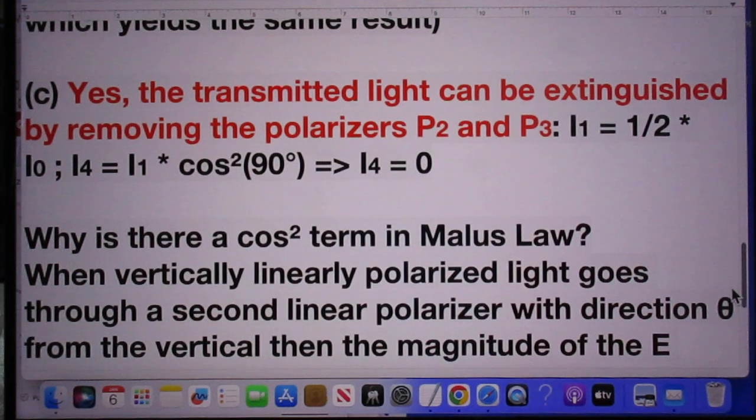Answer to question three: Yes, the transmitted light can be extinguished by removing both polarizers P2 and P3. It's obvious because then the first linear polarizer and the last one are at 90-degree angles to each other, and so I4 is zero.